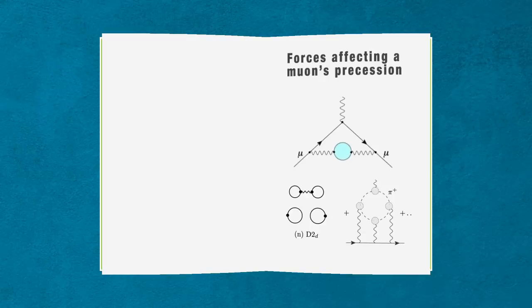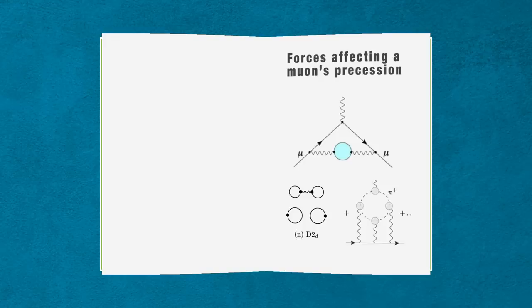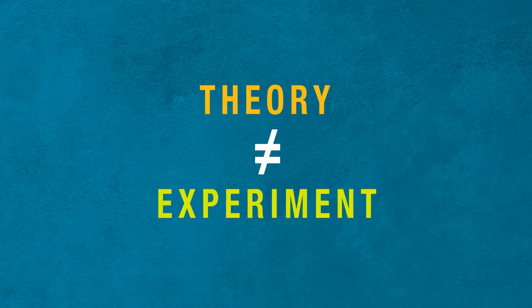Scientists have made incredibly precise calculations of how muons should move. So making an equally precise measurement of this property is a good test of the theoretical model. If theory and experiment don't agree, then there must be undiscovered particles or forces at work.